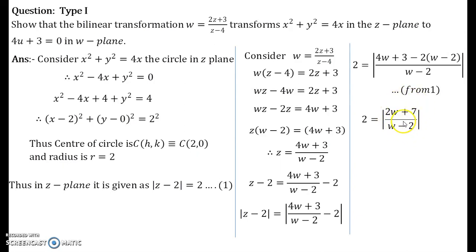Now, you use the property of mod that was given in video lecture number 3. That is |z₁/z₂| is nothing but |z₁|/|z₂|. That is what I have used here. Now, you take the denominator and multiply it to the LHS, that is with the 2. This is simplification because we are going to solve it further. Now what you get is 2|w-2| = |2w+7|.